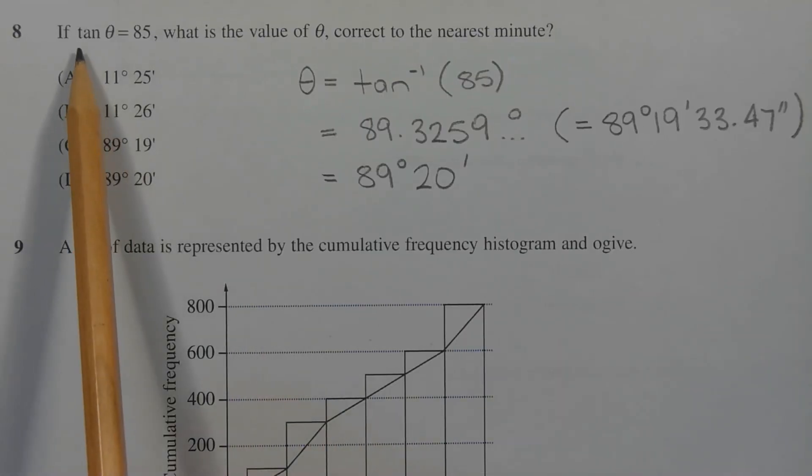The original equation is tan theta equals 85. Now, tan theta is the ratio, opposite side over adjacent side.